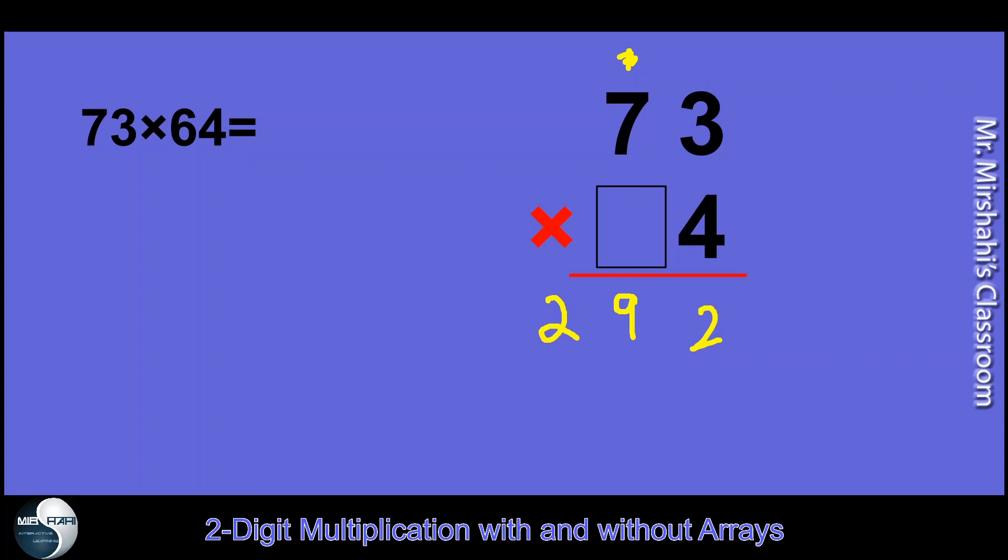Here I have 60, so I put the 0 first. Now pretend it's 6 now. 6 times 3 is 18, carry the 1. 6 times 7 is 42, plus 1 is 43.